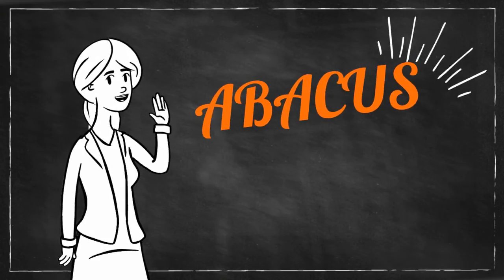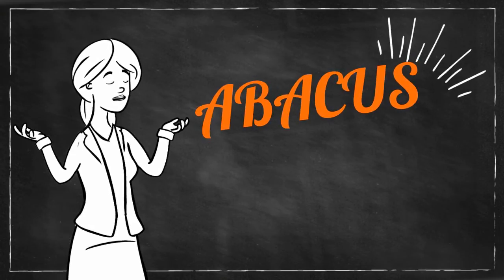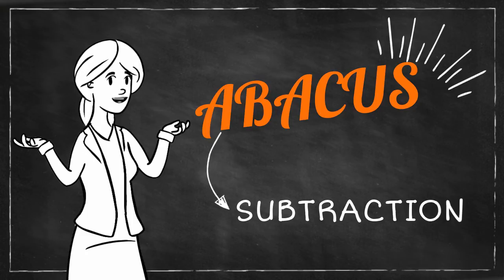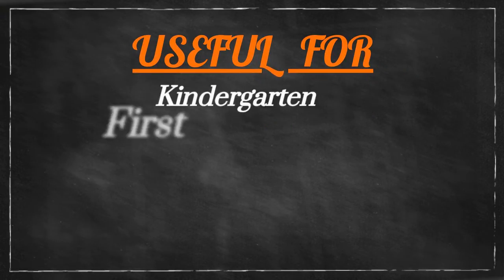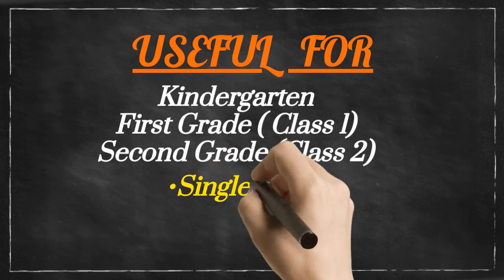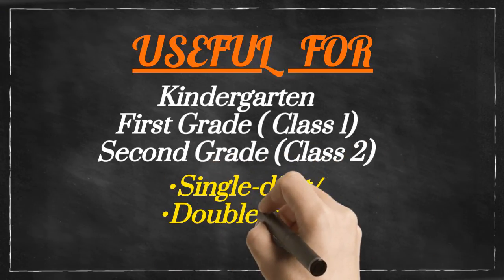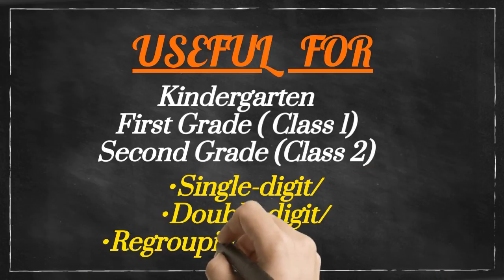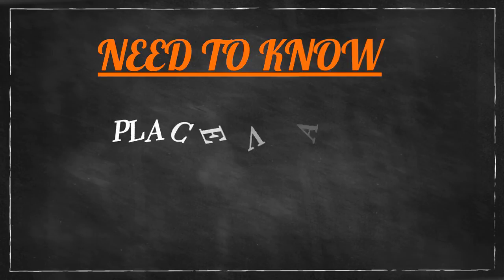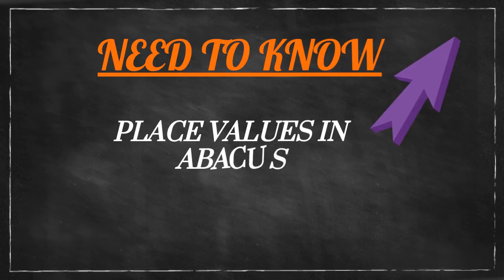Hi friends! In this video we will talk about how to do subtraction on an abacus. This video will be useful for kindergarten, first grade, and second grade, as we will do single digit subtraction, then double digit, and then with regrouping. For this we need to know about place values — click the link to learn about place values in abacus first.